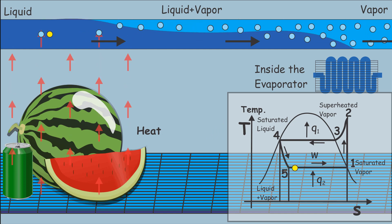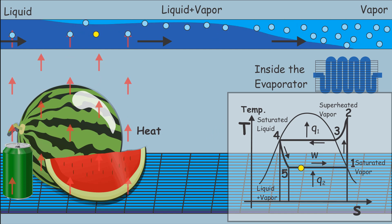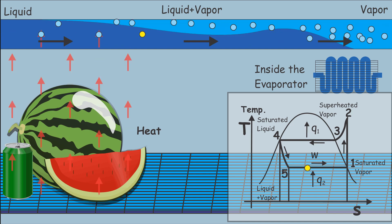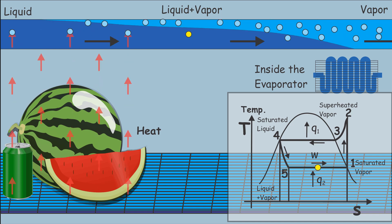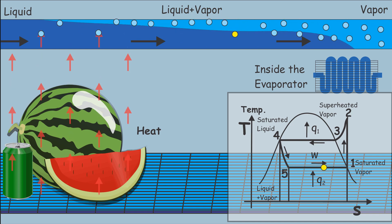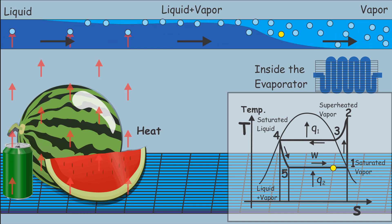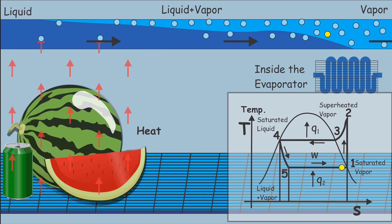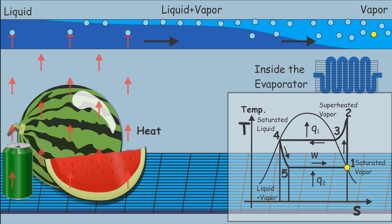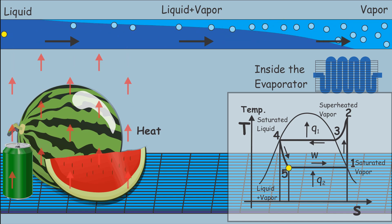Now the cold liquid refrigerant enters the evaporator. Because its temperature is lower than the environment temperature, it takes energy in form of heat from its environment, which again results in a phase transition of the refrigerant that evaporates into gas and so cools down the cooling chamber.